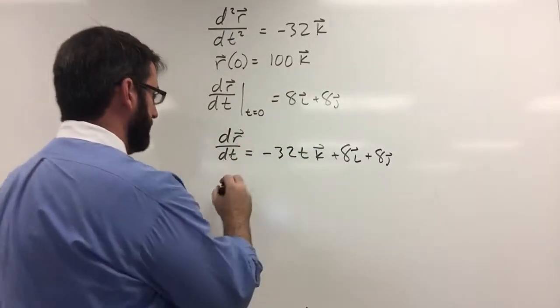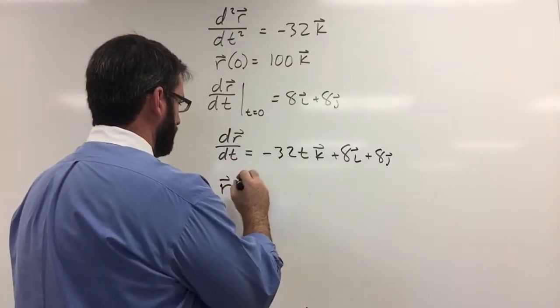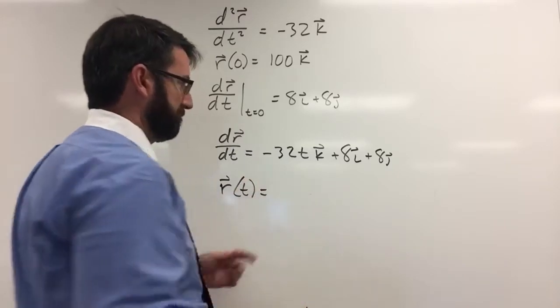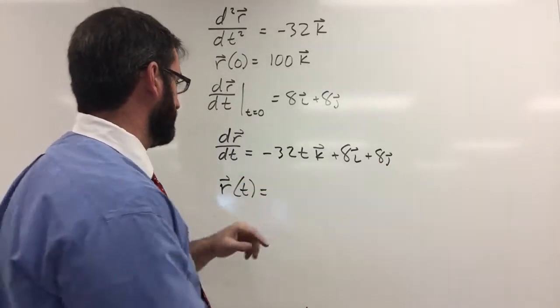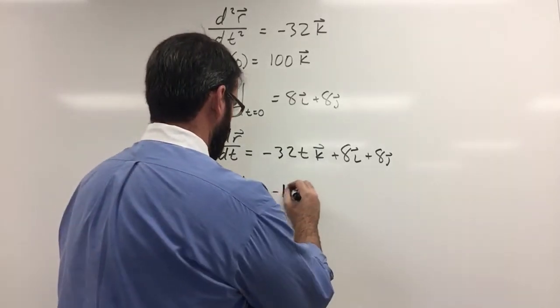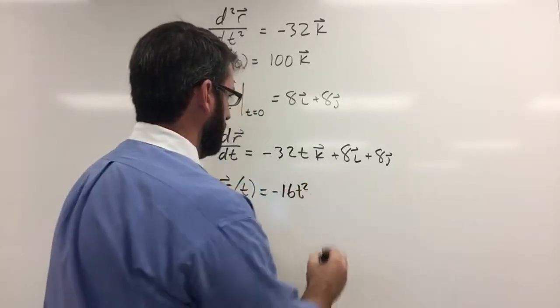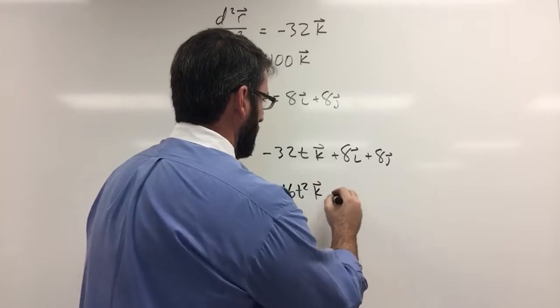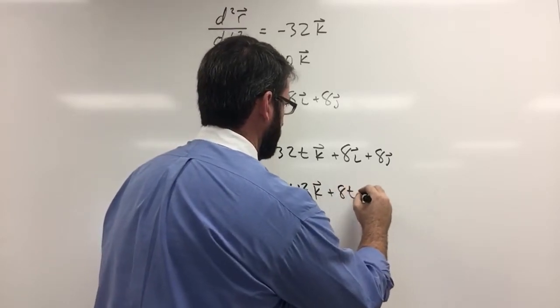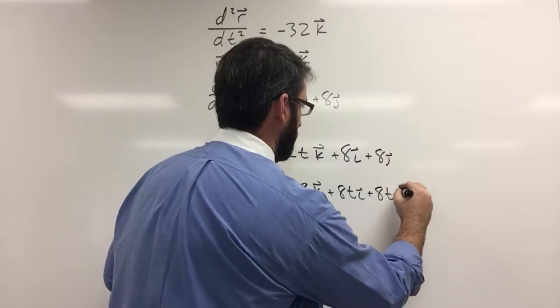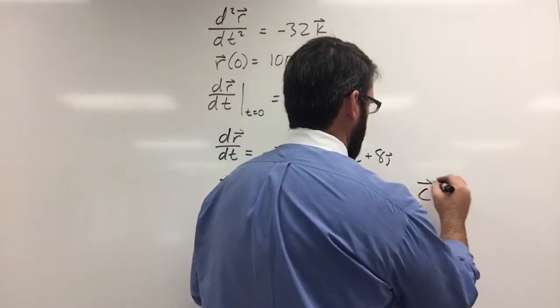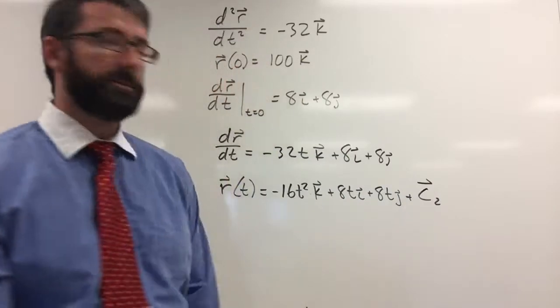All right, now to get r, r of t, we're going to integrate this. And so that's going to give us negative 16t squared k plus 8ti plus 8tj plus a constant vector, which we'll call c2.